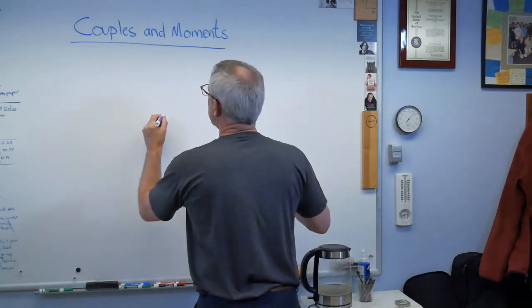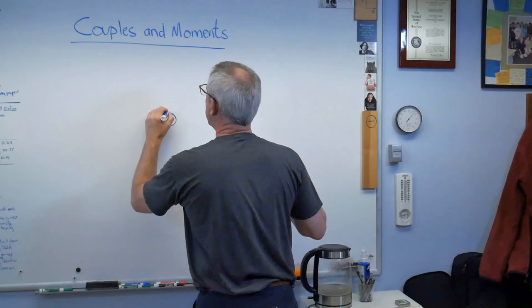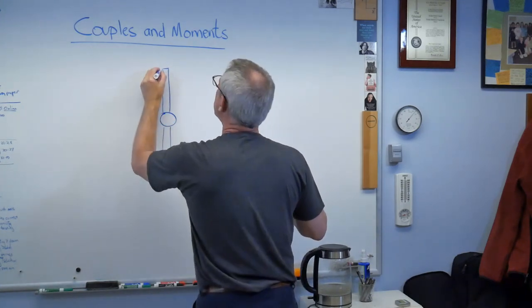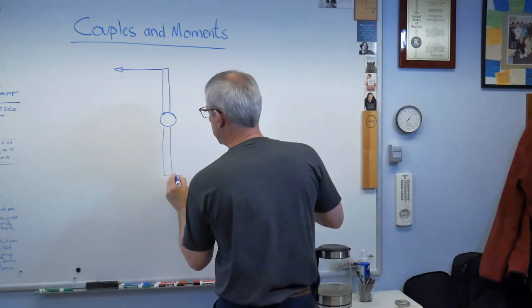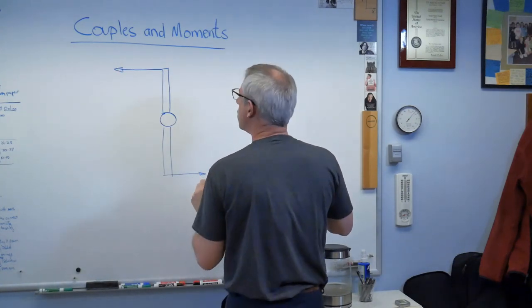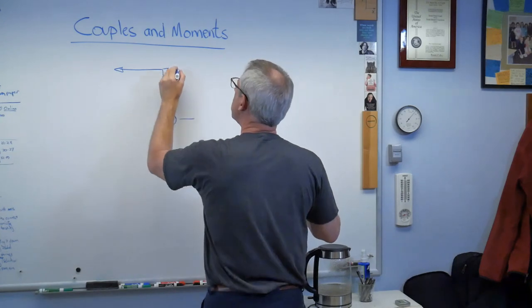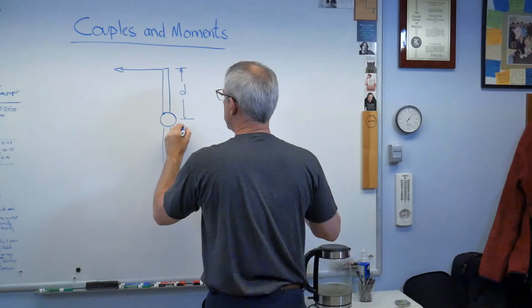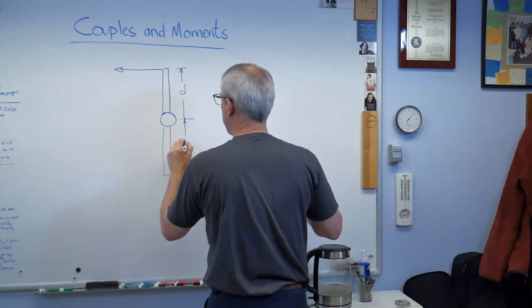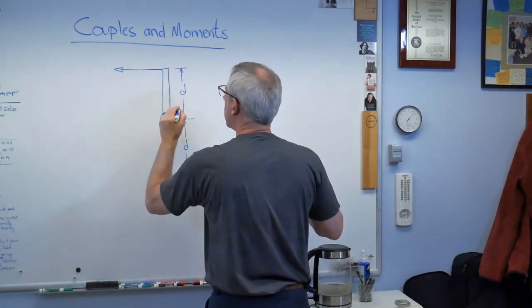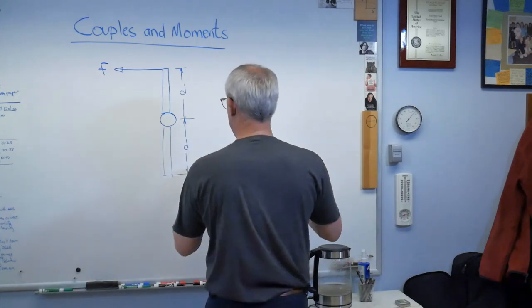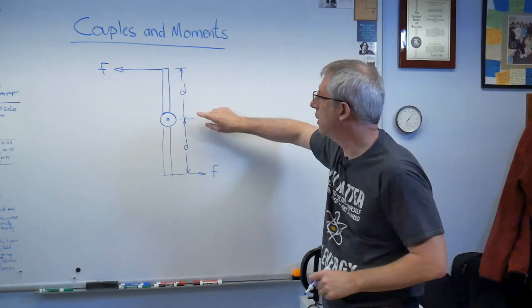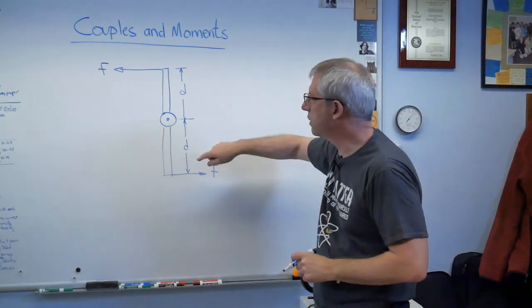If I have a shaft here, something that can turn, and I've got two sort of arms coming off it, I could apply a force in one direction and a force in another direction. And let's say that these are equal forces and the dimensions here are equal as well. Okay, so there's a force, and there's a force. There's the center of the shaft, and these forces are separated from the center of the shaft by this distance d.